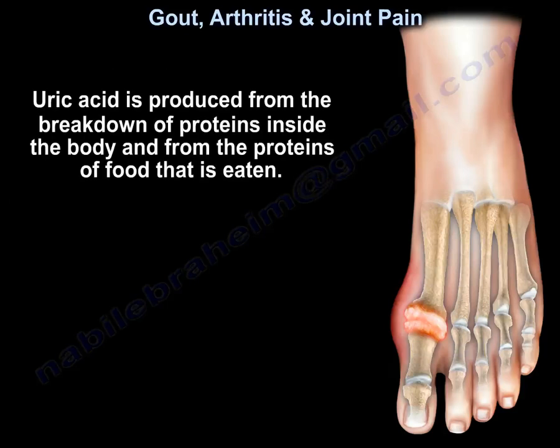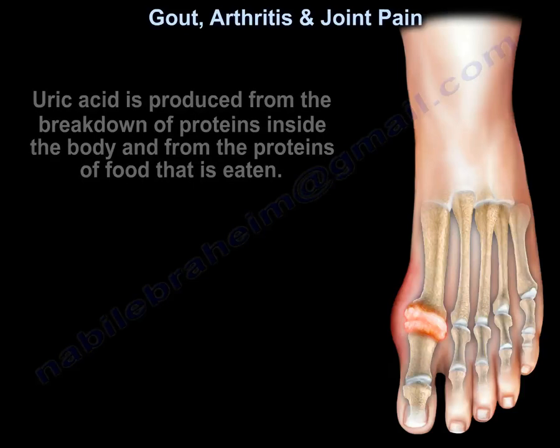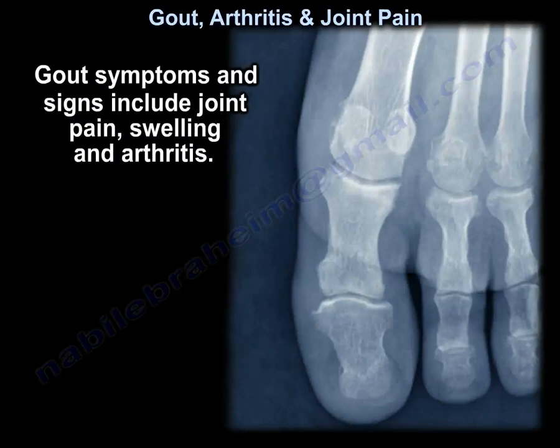Uric acid is produced from the breakdown of proteins inside the body and from the proteins of the food that is eaten. Gout symptoms and signs include joint pain, swelling, and arthritis.